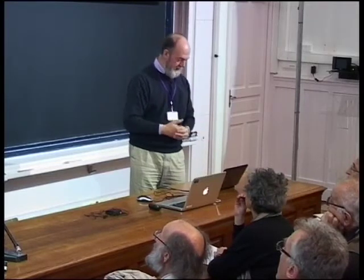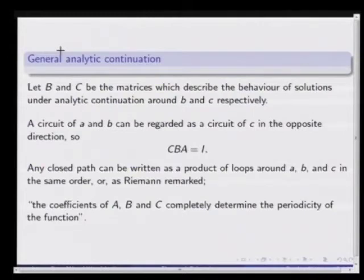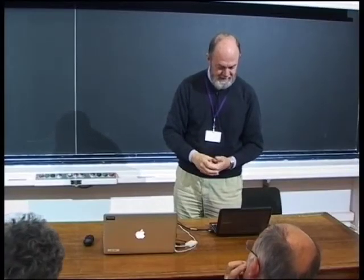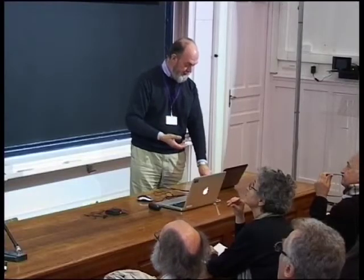His P-functions can be continued analytically in a loop around a branch point. He explains that in this way you get a matrix of constants, determined by taking a particular branch of the P-function around a given branch point — you have one matrix for each of the branch points at Z equals A, B, and C. If you think of those three points on the sphere, going around two of them is like going around the other one in the opposite direction, so if you go around all three in order you perform the identity transformation. The monodromy matrices he has satisfy this identity, and he claims that the coefficients of these matrices completely determine the geometrical behavior of the P-function.